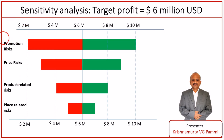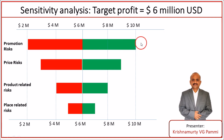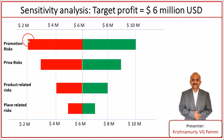For example, the promotion related risks — keeping price related risks, product related risks, and place related risks at their base level — we check how maximum and how minimum the promotion related risks can be sensitive towards our target of making 6 million US dollars. Promotion related risks can provide a profit margin of 10 million US dollars at the end of the first year if we handle them well. If we don't handle them well, it provides a profit margin of 2 million dollars with the current promotion campaign.